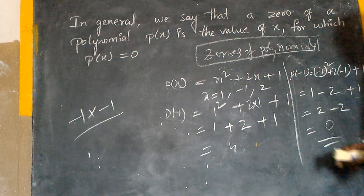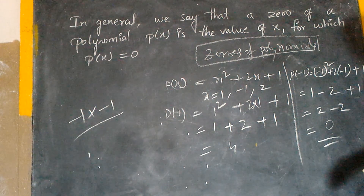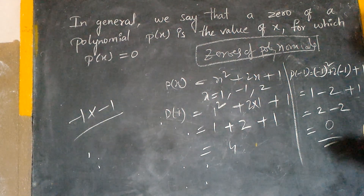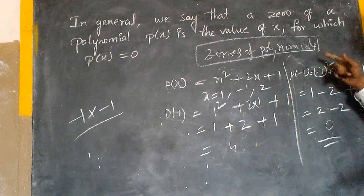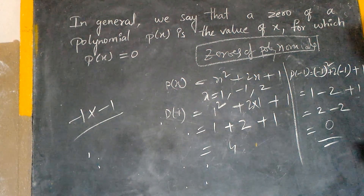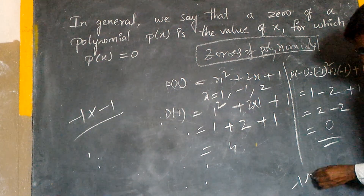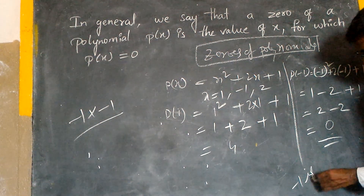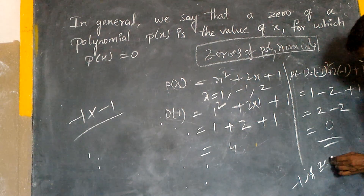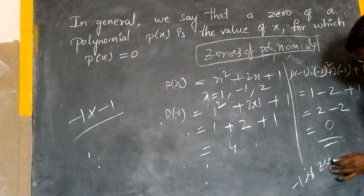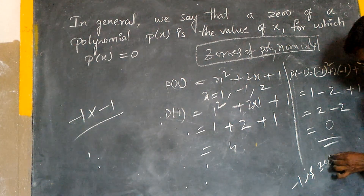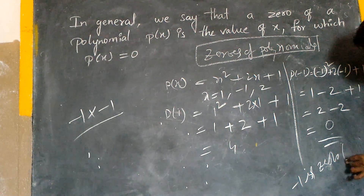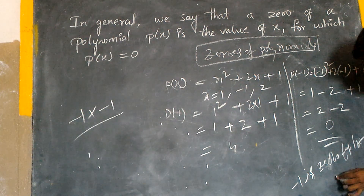This is the value option, but not equal to zero. So, if the value is equal to zero, minus one is a zero of the polynomial.